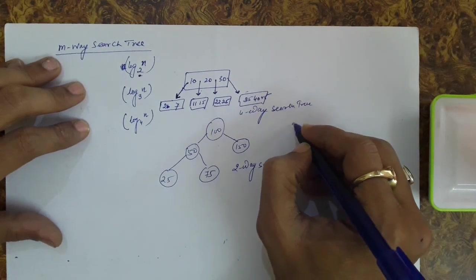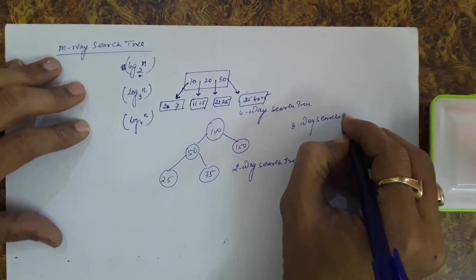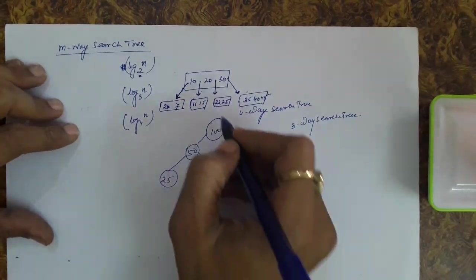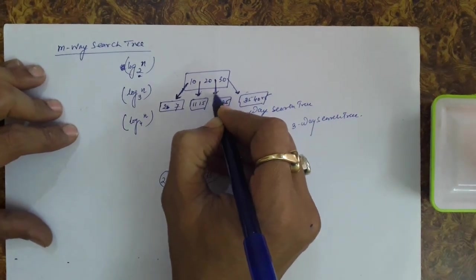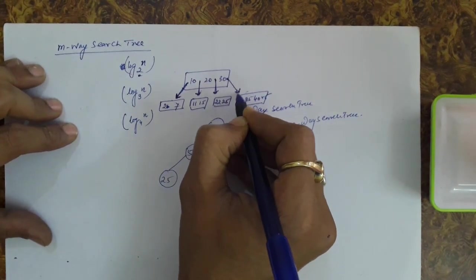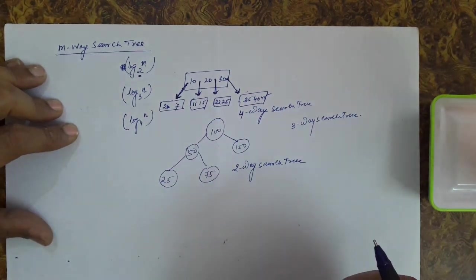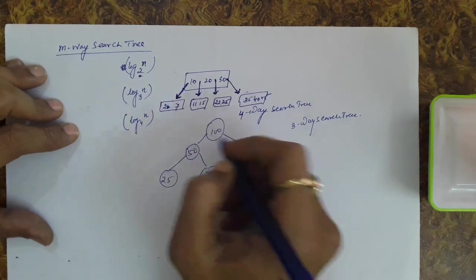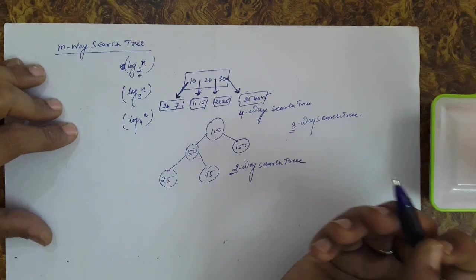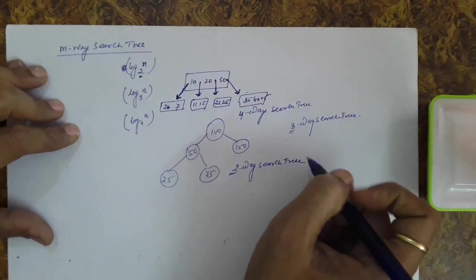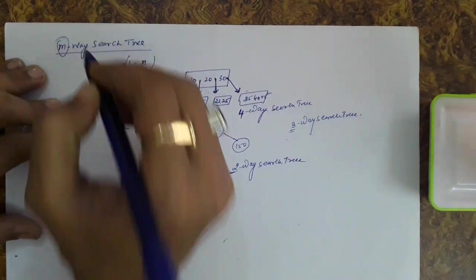Similarly, we can have a three-way search tree, a five-way search tree, and so on. The number of ways you can go from a particular node to search an element tells us what kind of tree it is. A binary search tree is a two-way search tree; we can also have a ternary tree with three ways. This is the general idea of the m-way search tree.